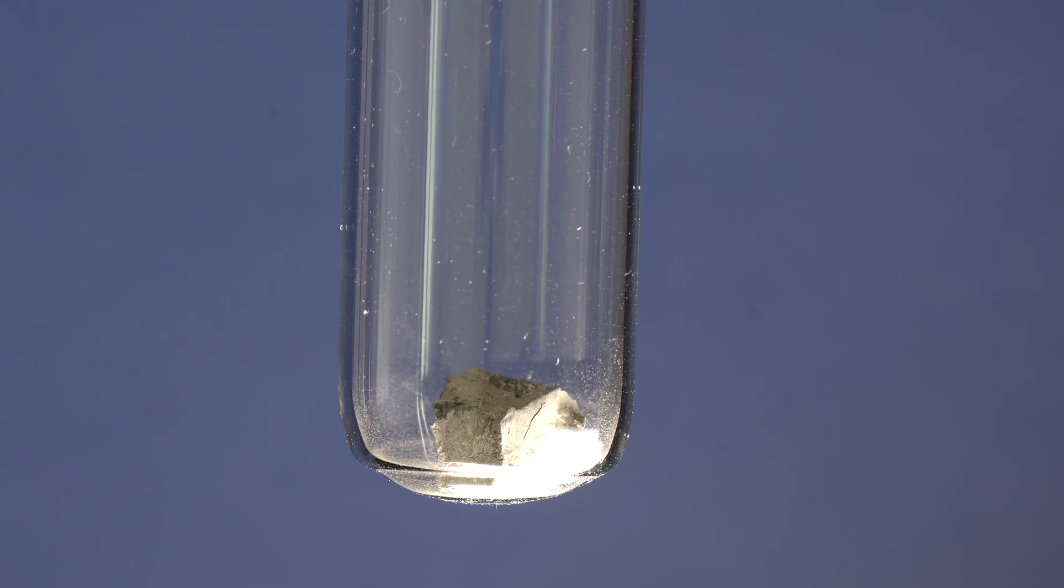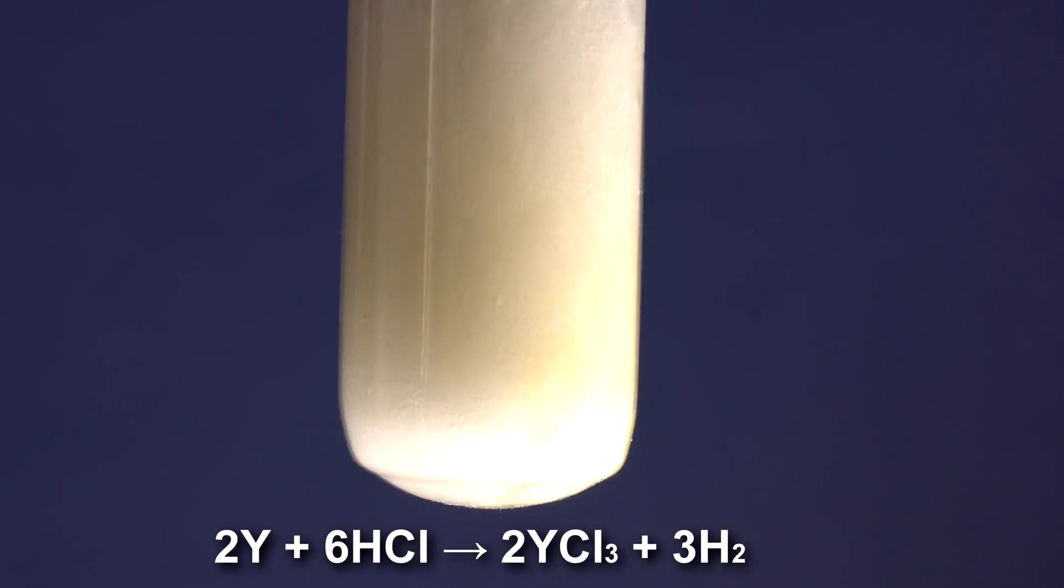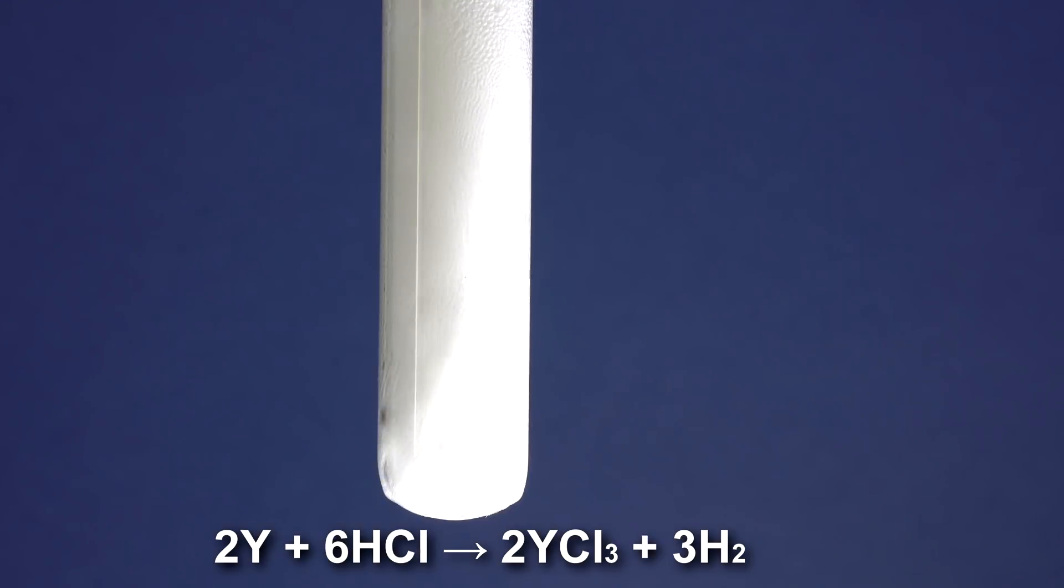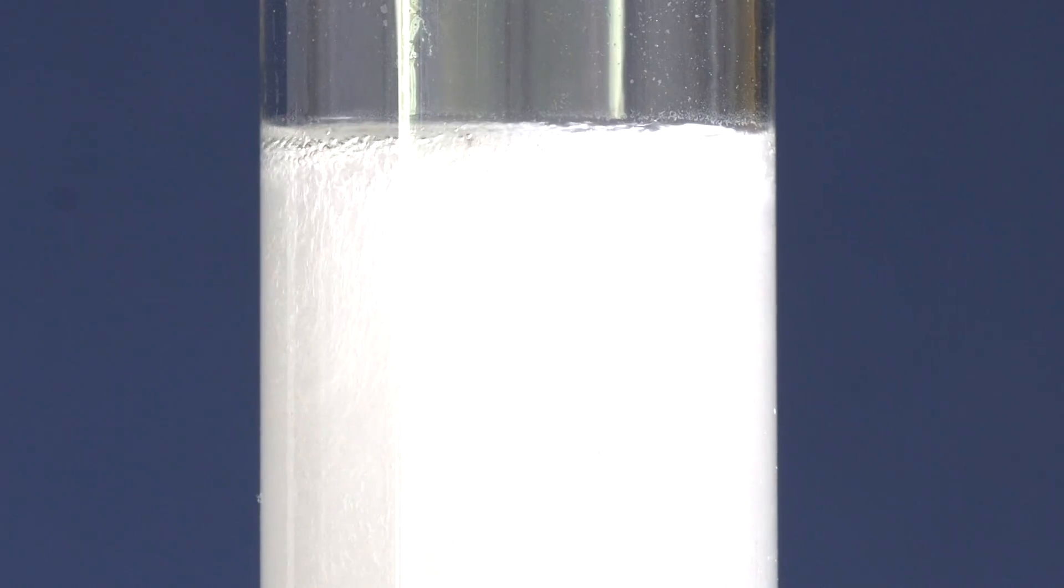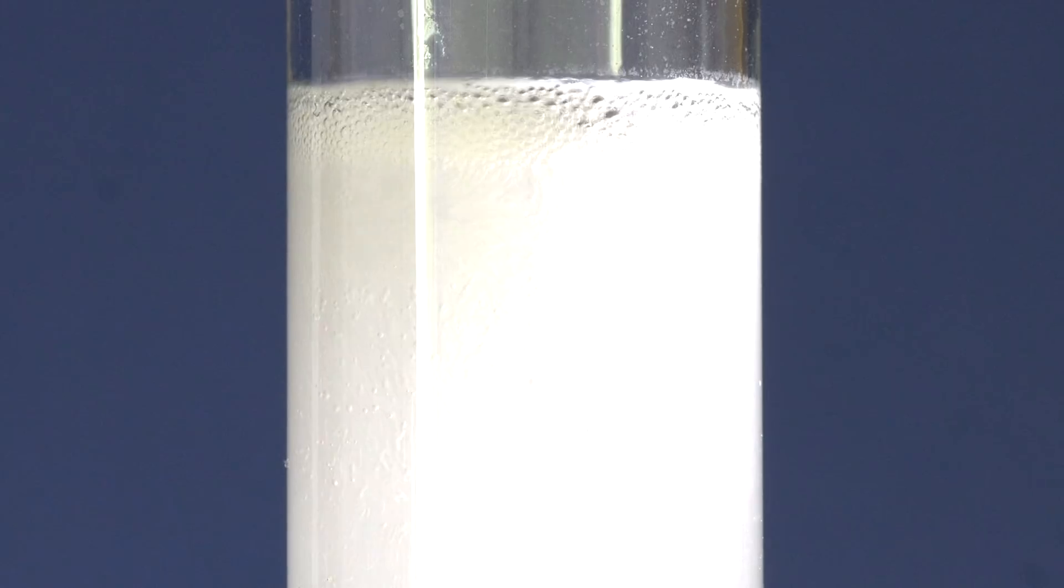Yttrium's chemical activity is similar to that of other lanthanides. It also reacts well with acids. For instance, when reacting with hydrochloric acid, it forms hydrogen and yttrium chloride, which is used, for example, for purifying metallic yttrium.